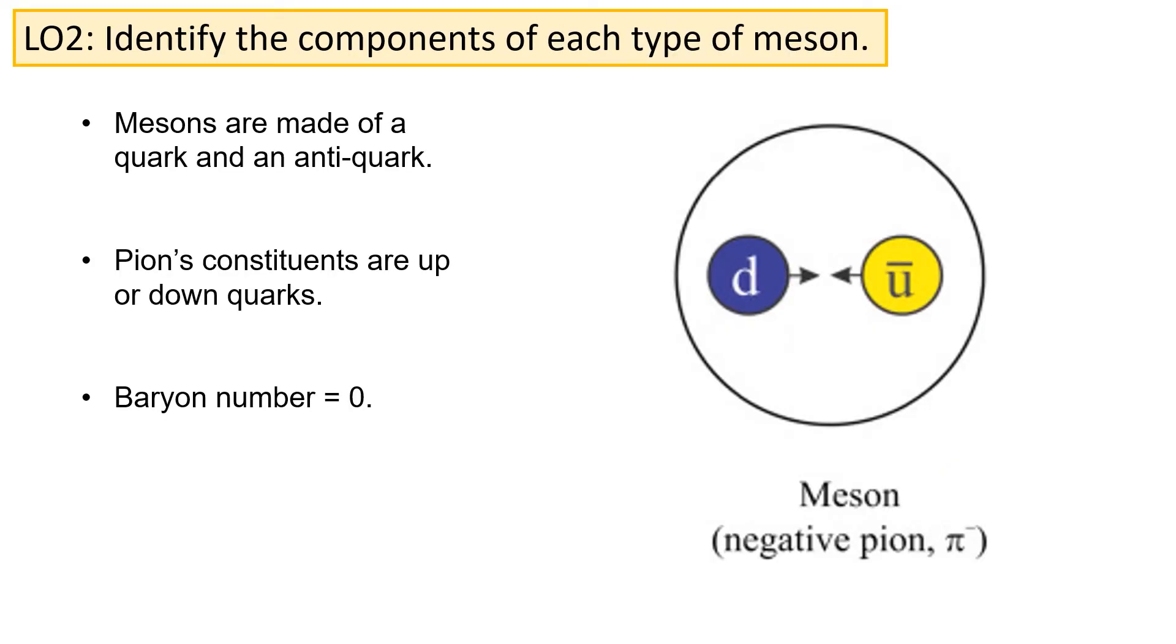In addition to baryons, the other type of particle made up of quarks are the mesons. Mesons always contain a quark and an anti-quark. For example, pions are made up of up or down quarks in some combination of quark and anti-quark. Mesons always have a baryon number of zero. I'll leave it to the viewer to work out why this is the case.